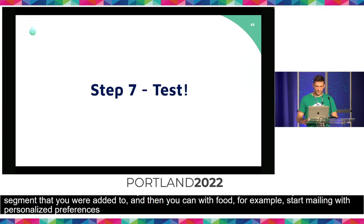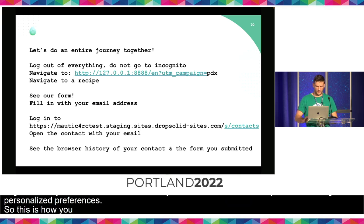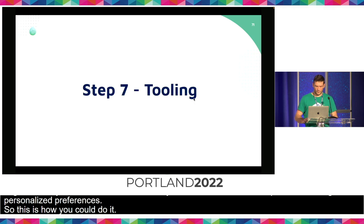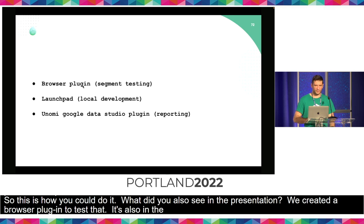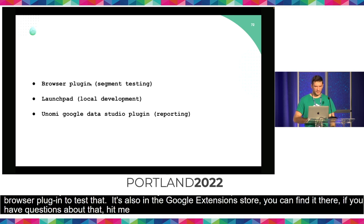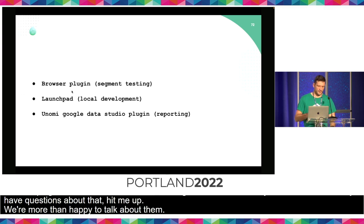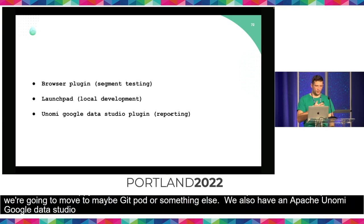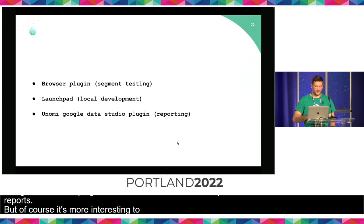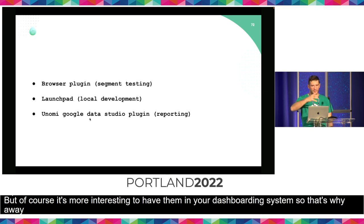What else did you see in the presentation? We created a browser plugin to test that — it's also in the Google extension store, you can just find it there. We also use Launchpad for local development, but we're going to move to maybe Gitpod or something else. We also have an Apache Unomi Google Data Studio plugin, because it's more interesting to have dashboards in your dashboarding system — that's why we created it, so you can integrate this Unomi data into your custom reporting.